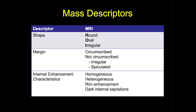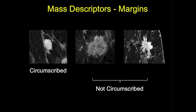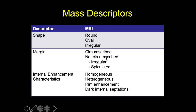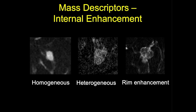Margins are also important predictors of the likelihood of malignancy. Margins are either described as circumscribed or not circumscribed. Not-circumscribed margins include irregular and spiculated. Internal enhancement characteristics for a mass include homogeneous — which is uniform and confluent — heterogeneous, which has variable non-uniform internal enhancement, and rim enhancement, which has peripheral rims around the lesion.